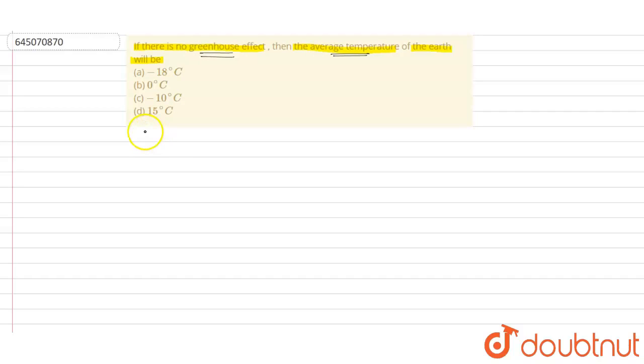So when we talk about greenhouse effect, what is greenhouse effect? Before that, I'm going to tell you about the greenhouse gases. There are different greenhouse gases such as CH4, carbon dioxide.